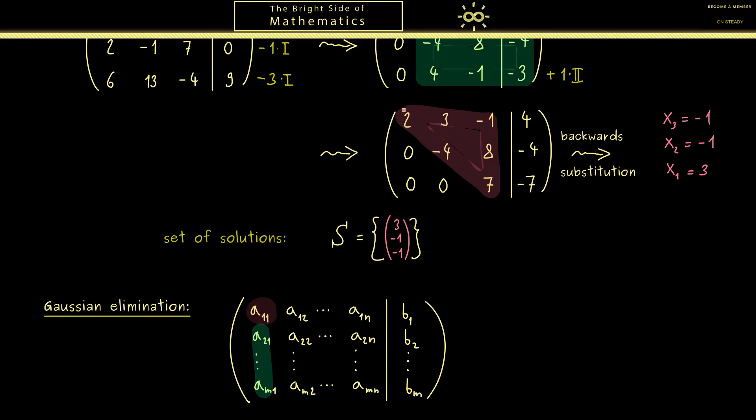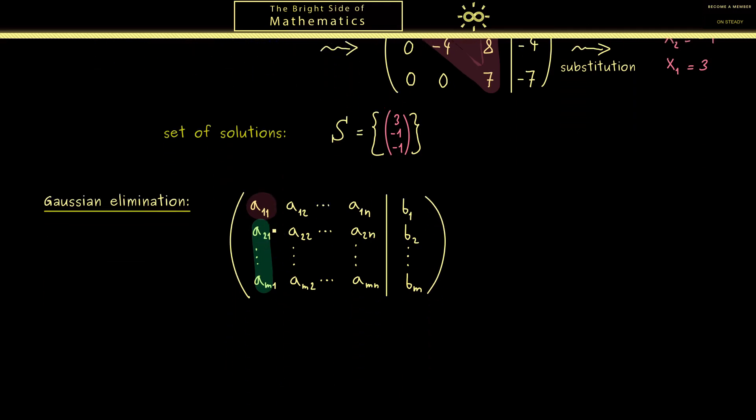Hence, for some cases, first you need to do some row exchanges, until you have a non-zero number here in the upper corner. However, of course, it can also happen, that you only have zeros in the first column here. But this means, you are already finished, you don't have to eliminate anything. Hence, in this case, you can immediately go to the next step, to the smaller matrix here.